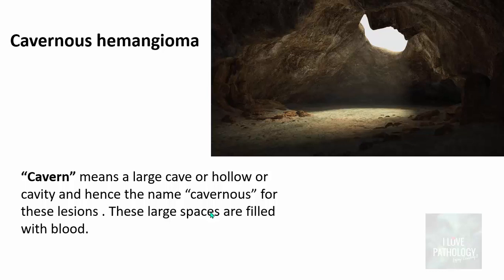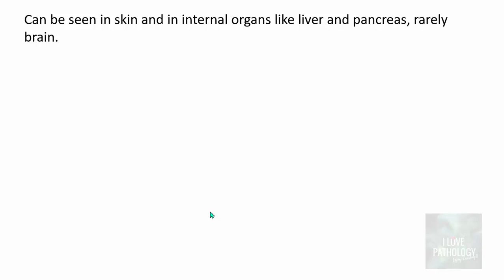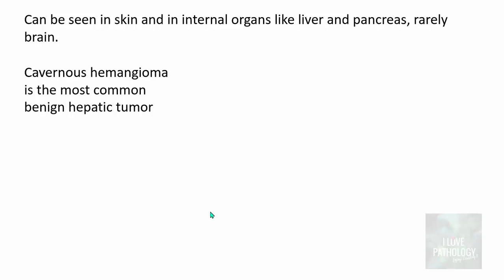Moving on to cavernous hemangioma. The word 'cavern' means a large cave or hollow cavity, hence the name cavernous. These hemangiomas contain very large spaces filled with blood. They can be seen in skin and internal organs like the liver and pancreas, and rarely in the brain. In the liver, cavernous hemangioma is the most common benign hepatic tumor.